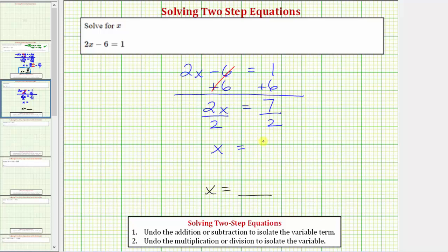On the right side, we have 7 divided by 2, or the fraction 7 halves. The fraction 7 halves does not simplify, because the only common factor between 7 and 2 is 1. Therefore, our solution as a fraction is 7 halves.